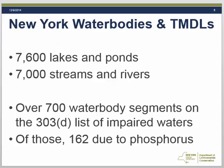In New York, there are approximately 7,600 lakes and ponds, and approximately 7,000 streams and rivers. Monitoring has identified more than 700 of these water bodies which do not meet water quality standards, and are therefore on the state's 303D list of impaired waters. Of the water bodies on the 303D list, 162 of these listings are related to phosphorus.